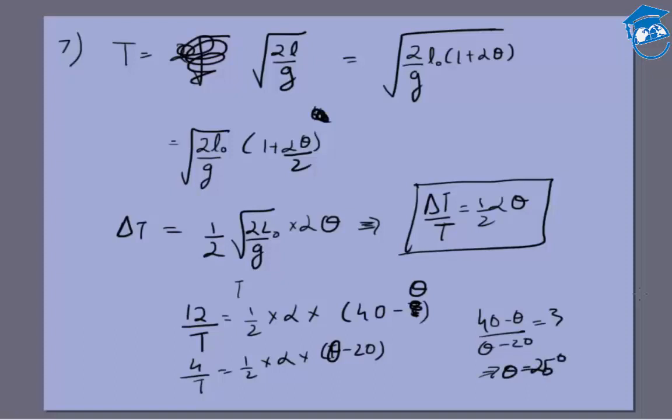But let's calculate alpha as well. That can be calculated easily. θ minus 20 is 5, so what you'll get is half into alpha into 5 equals 4 divided by the number of seconds in a day, which is 3600 multiplied by 24.